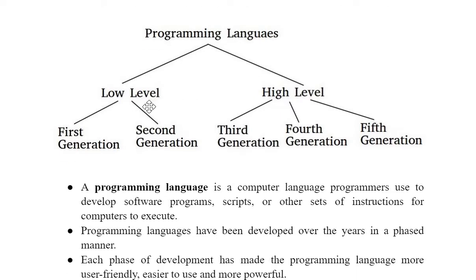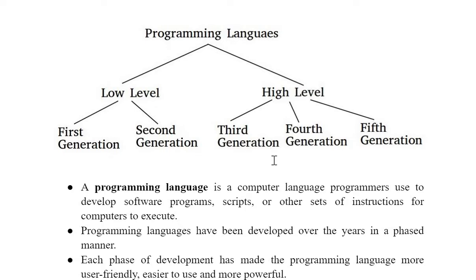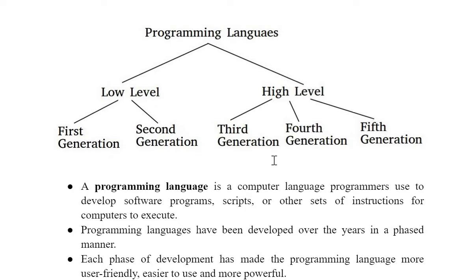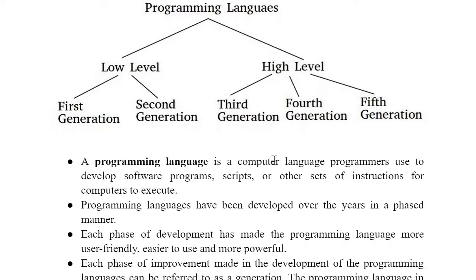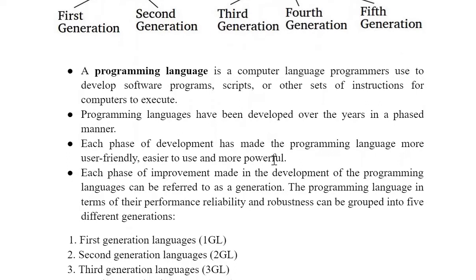You can see here that low level language is again divided into first generation and second generation, and high level language is divided into third generation, fourth generation, and fifth generation. We will be knowing all these languages one by one in depth. Please continue the video till the end.